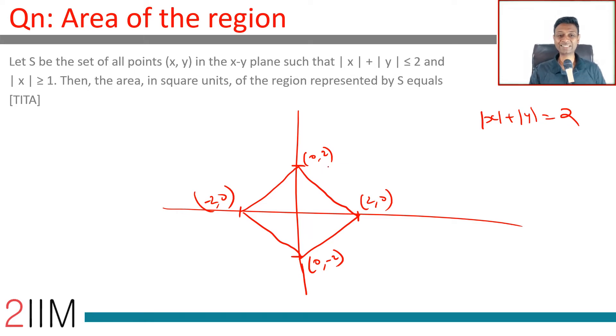|x| ≥ 1. |x| = 1 will happen when x is 1 or minus 1. So |x| = 1: x = 1 would be a line like this, x = -1 would be a line like this. |x| ≥ 1 would be either this region or this region.